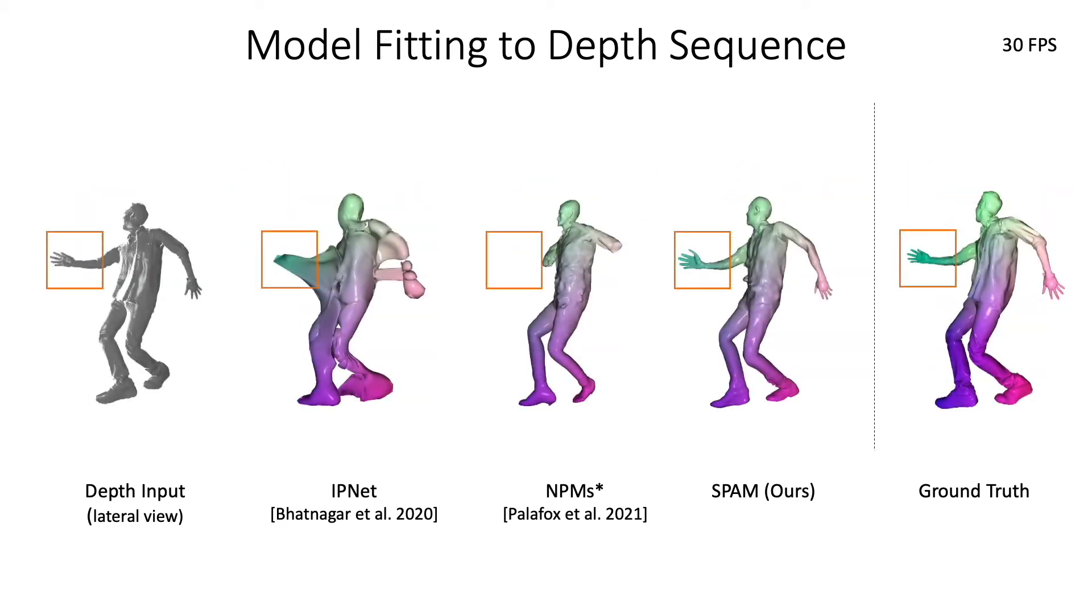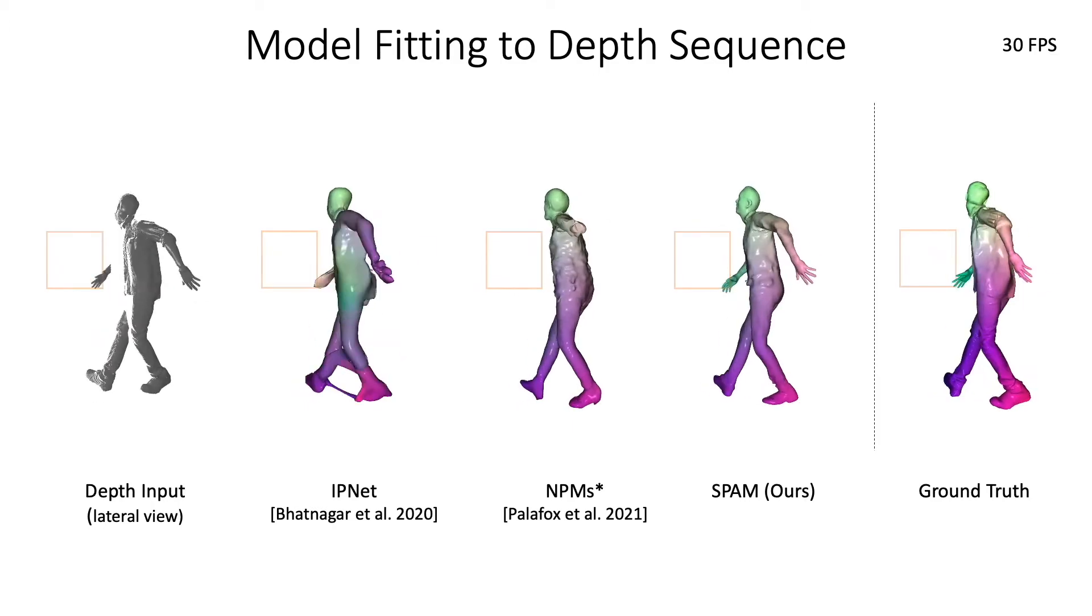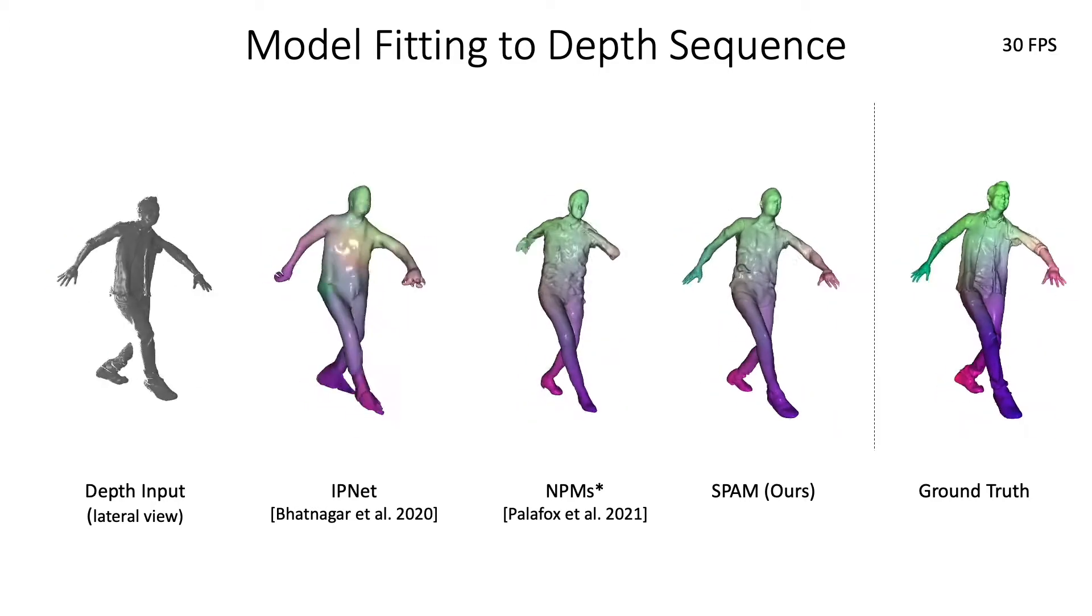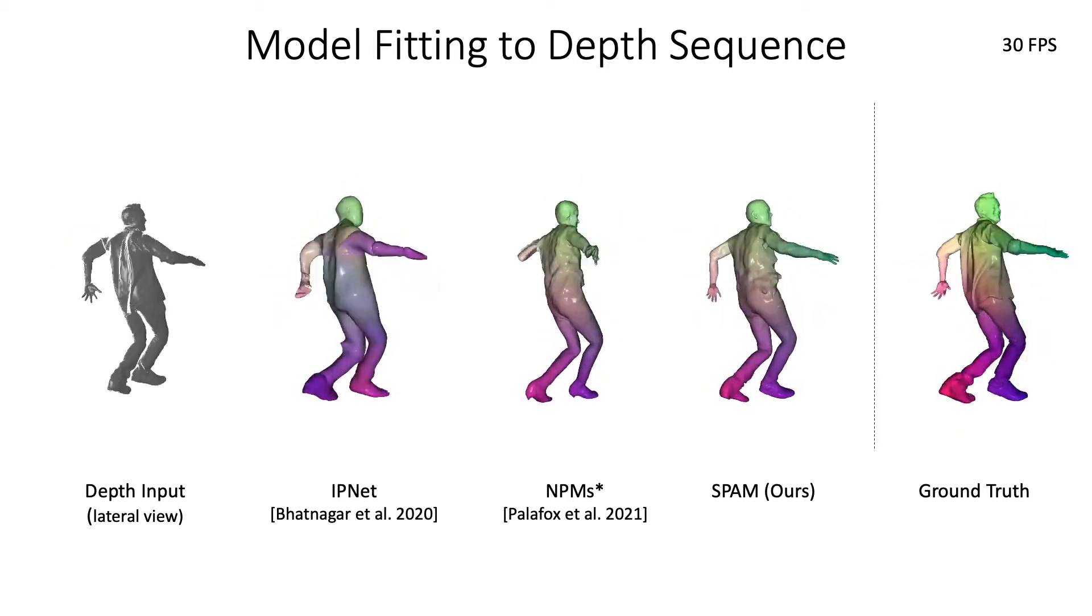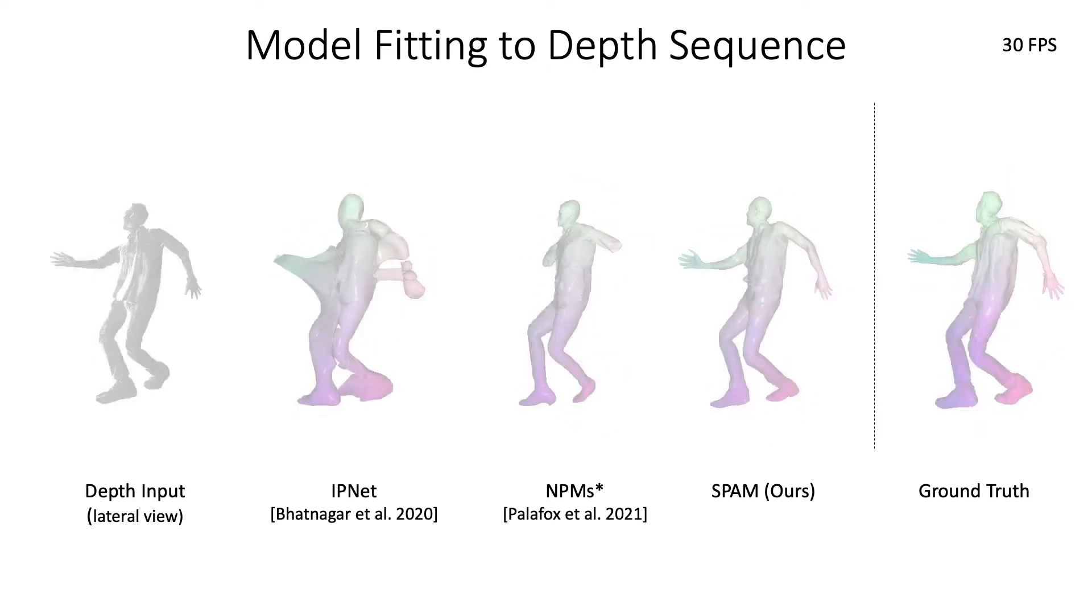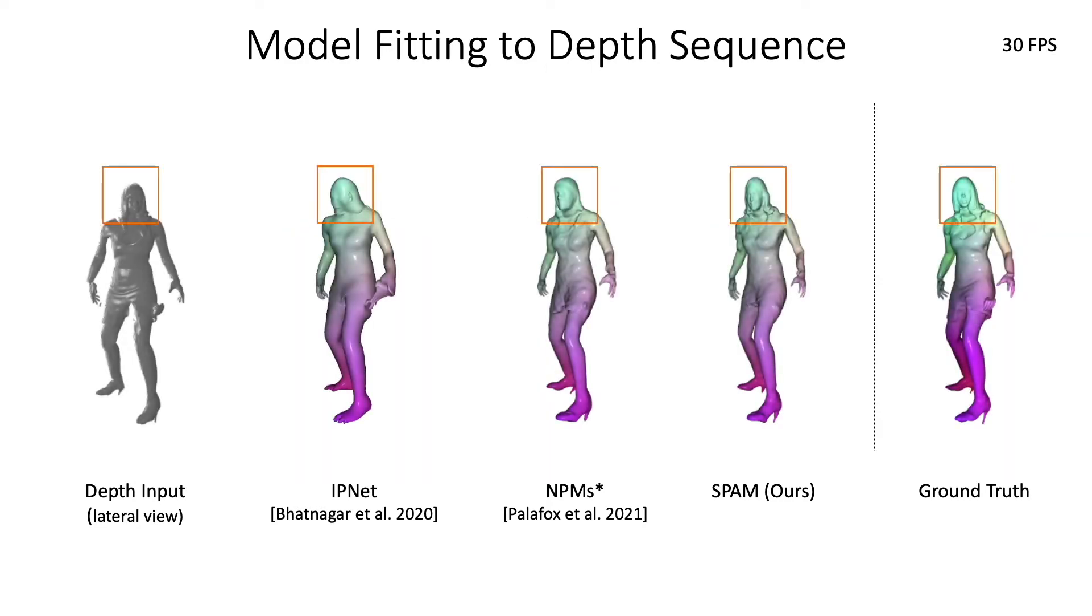As shown in the sequence, we are also robust to loop closures. In comparison to the baselines, we can retain more hair and facial attributes.